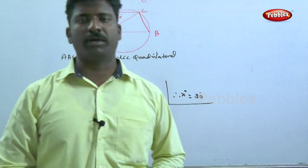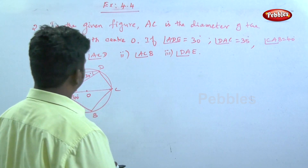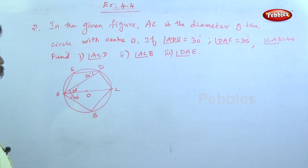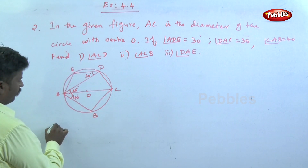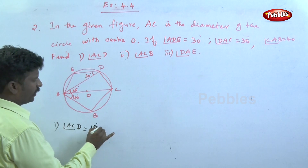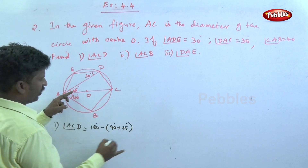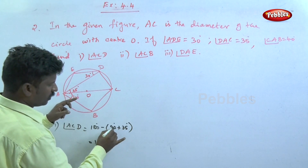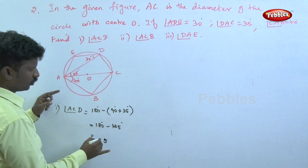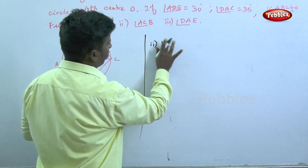Next problem: in the given figure, AB is the diameter of the circle with center O. Angle ABD is 30 degrees, DSE is 35 degrees, and angle CAB is equal to 40 degrees. Find angle ACD. Angle ACD equals 180 degrees minus 90 degrees plus 35 degrees, giving 180 minus 125 equals 55 degrees.